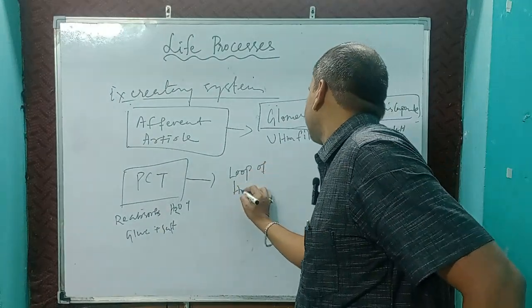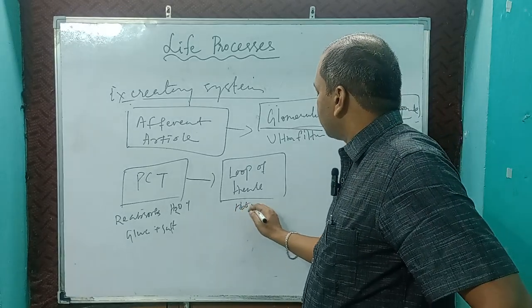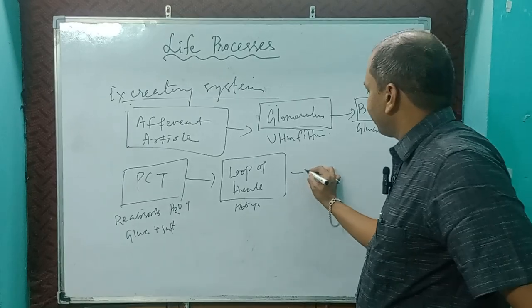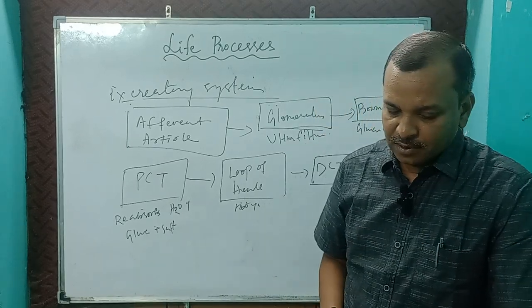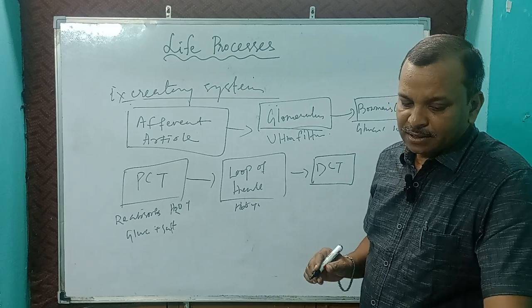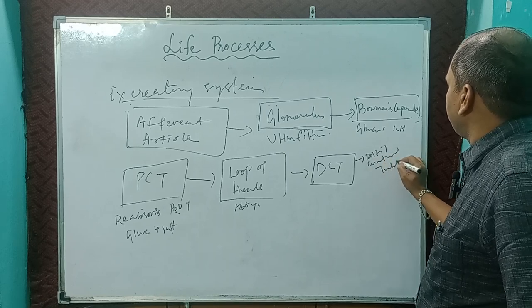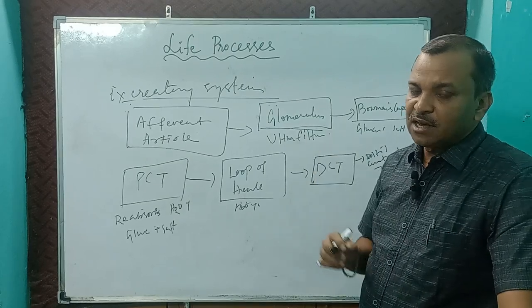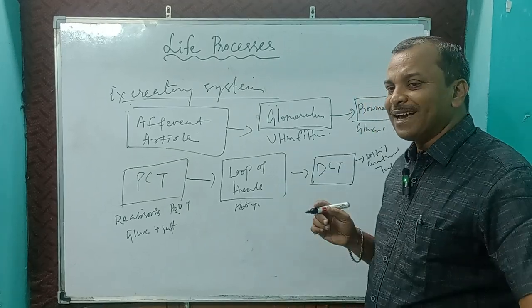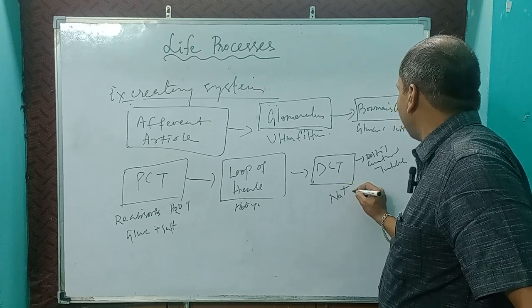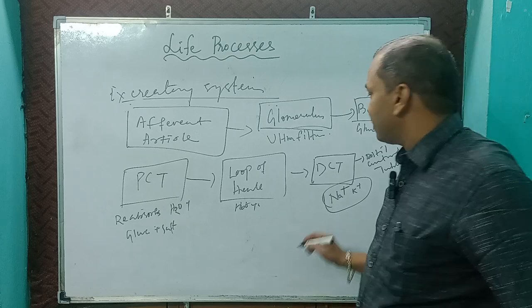From the PCT the filtrate goes to the loop of Henle, where reabsorption of water and salt also occurs. Then it goes to the DCT — distal convoluted tubule — which reabsorbs water, salt, and ions. The DCT also balances electrolytes like sodium (Na+) and potassium (K+) ions.